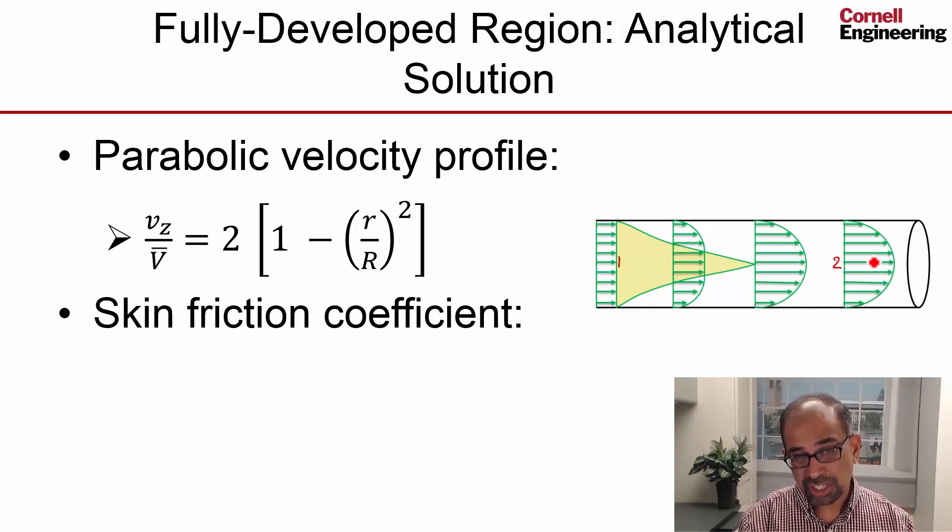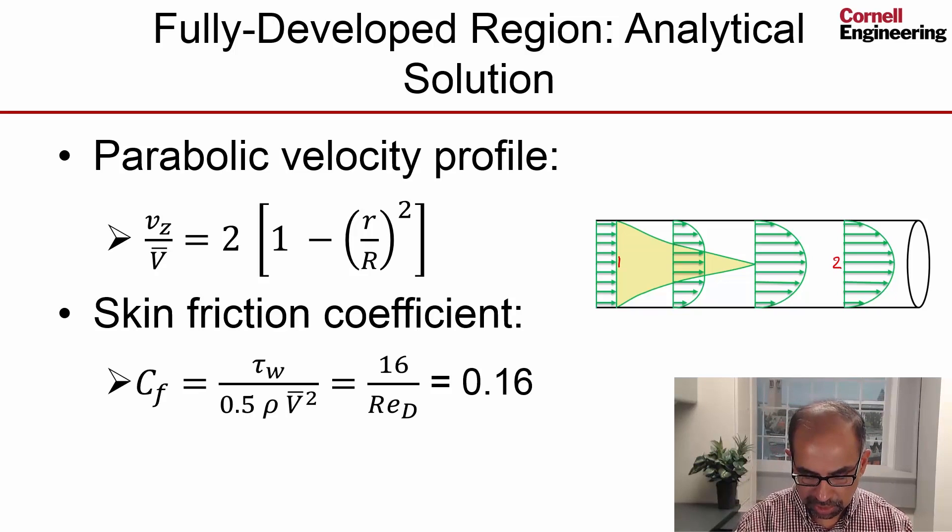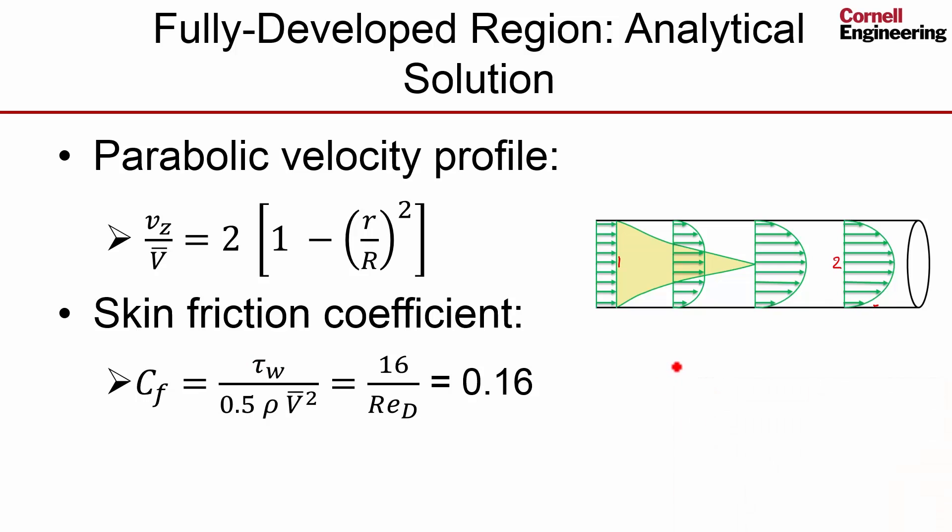The analytical solution also gives you the skin friction coefficient, which is a normalized wall shear. The wall shear τ_w is basically the friction at the wall—friction per unit area. In the fully developed region, it will be related